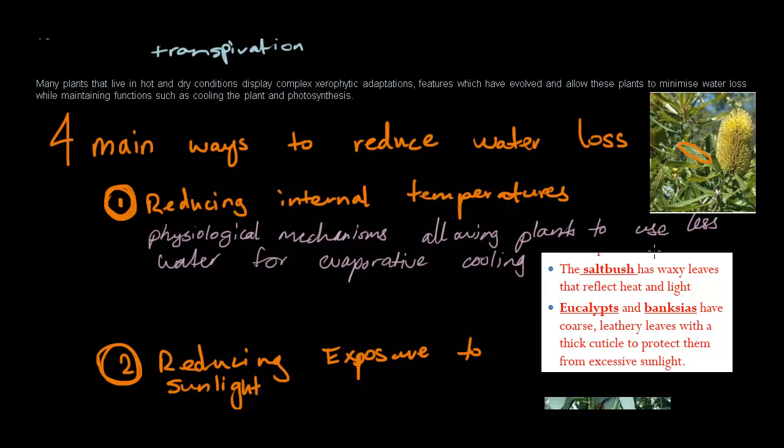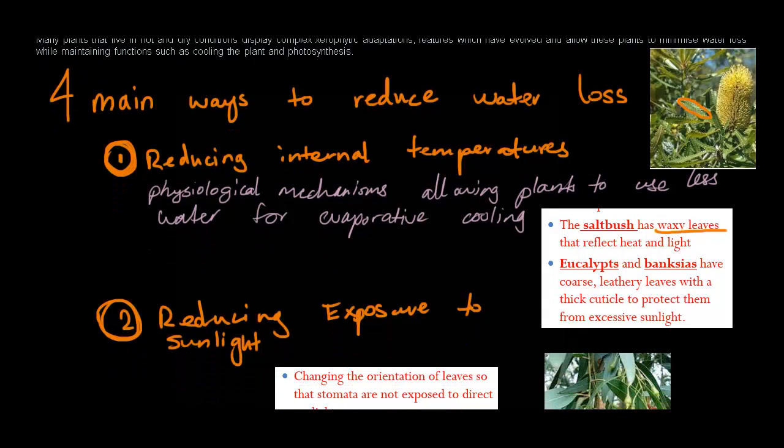Something else that I mentioned here was waxy leaves. Now waxy leaves are actually mentioned a lot in adaptations, and waxy leaves, they really do help. They help reflect heat and light, and therefore they help reduce internal temperatures. So let's move on to the second one.